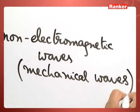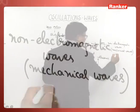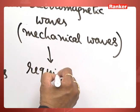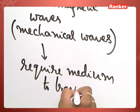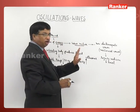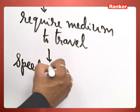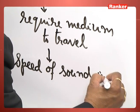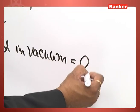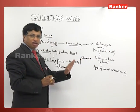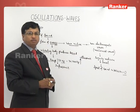Sound waves are non-electromagnetic and require a medium to travel. Without a material medium, sound cannot travel. So what would be the speed of sound in vacuum? The speed of sound in vacuum is zero — that means it does not travel through vacuum. It needs a material medium to travel. That is the concept one has to understand.